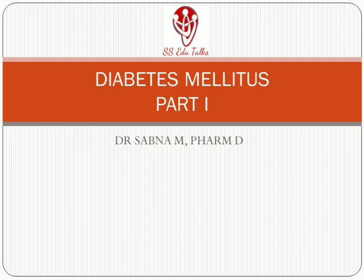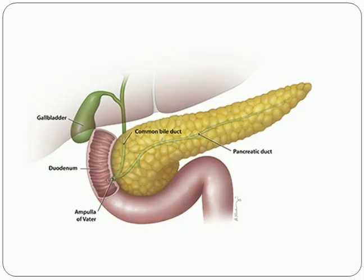Insulin is produced from the pancreas. The pancreas is part of the GIT, or gastrointestinal tract. It is an organ that mainly contains two parts: the exocrine part and the endocrine part. The exocrine part mainly produces digestive enzymes like amylases, lipases, and proteases that help in digestion.